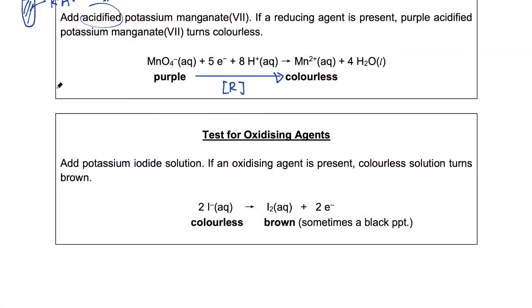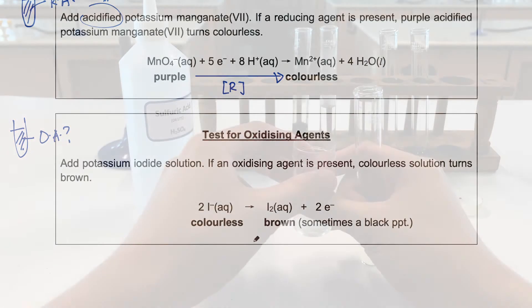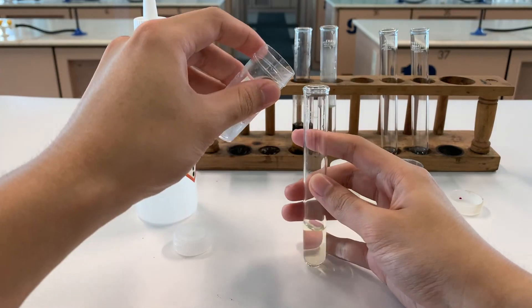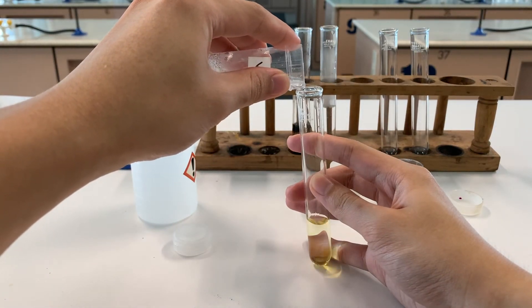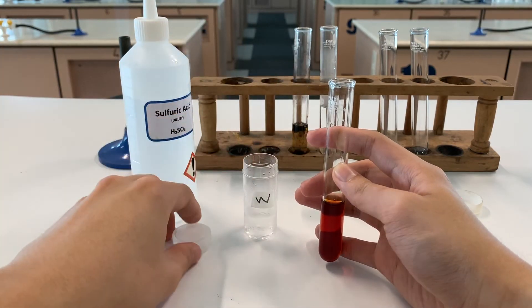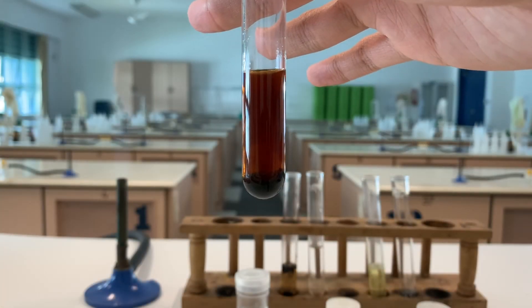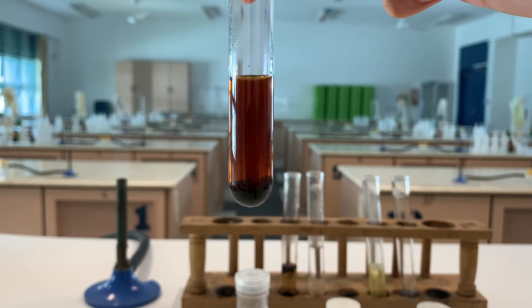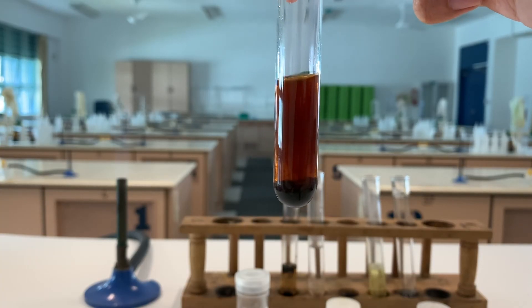Likewise, how do I know that an unknown solution contains an oxidizing agent? An oxidizing agent causes something to be oxidized. When iodide ions are being oxidized, there is a color change from colorless to brown. When a lot of iodine is being produced, sometimes you may see some black solids form.